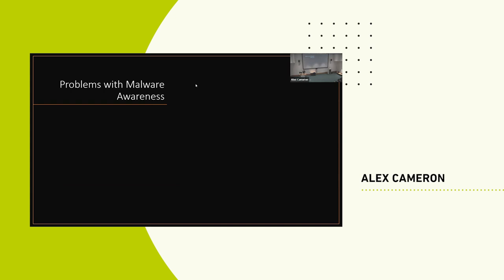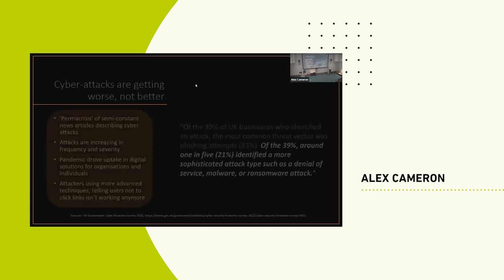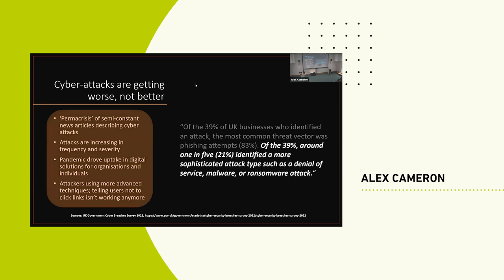Now we'll look at some of the problems with malware awareness. Cyber attacks are getting worse, not better. From the UK Government's Cyber Breaches Survey: of the 39% of businesses who identified an attack, the most common threat vector was phishing at 83%. But of that 39%, around one in five identified more sophisticated attack types such as denial of service, malware, and ransomware. Attacks are getting smarter — attackers are no longer just blanketing things; they're deliberately targeting and looking for ways to extract maximum value.